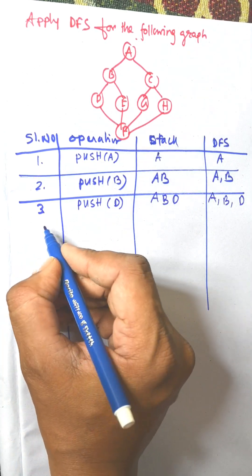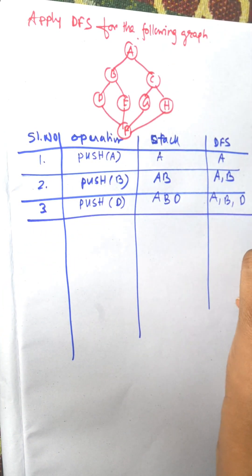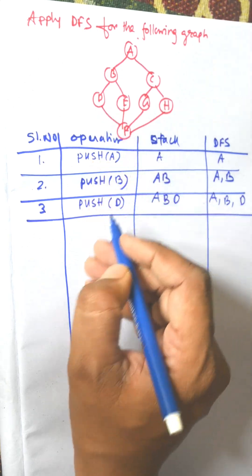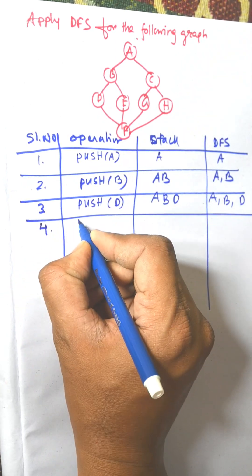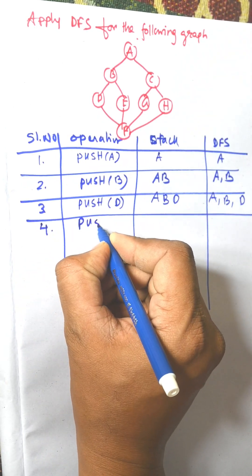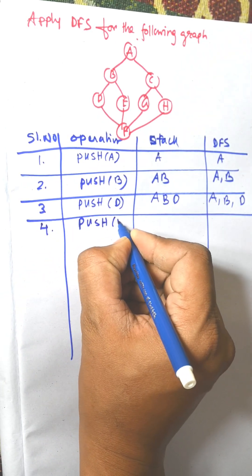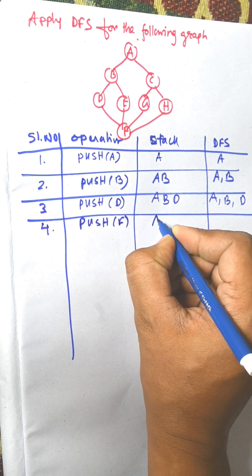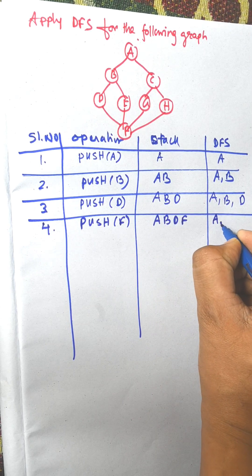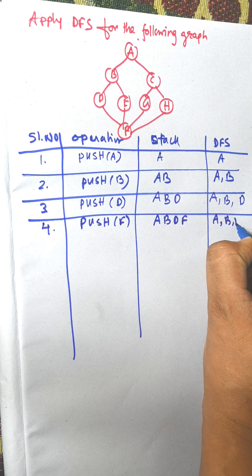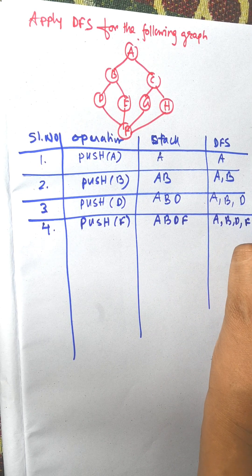Serial number 4. From D there is only one connected node, so push F. The stack is now A, B, D, F and the visited list is A, B, D, F.